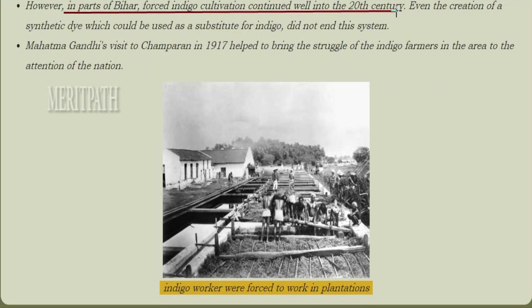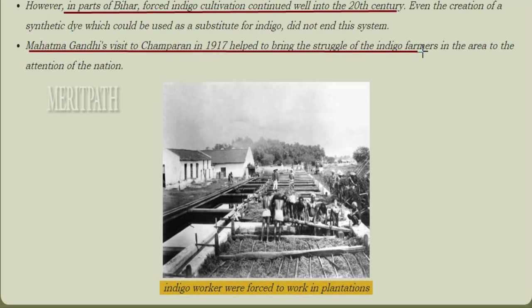In parts of Bihar, forced indigo cultivation continued into the 20th century. Even the creation of a synthetic dye as a substitute for indigo did not end this system. Mahatma Gandhi's visit to Champaran in 1917 helped bring the struggle of indigo farmers to the attention of the nation.